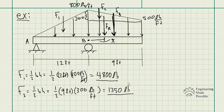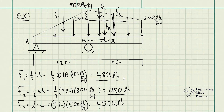F3 equals the area of the rectangle, which is length times width: 9 feet times 500 pounds per foot, since 500 lb/ft is the height of this rectangle. That gives us F3 = 4500 pounds. Now that we have all three forces, we also need to find the location of each with respect to point B.